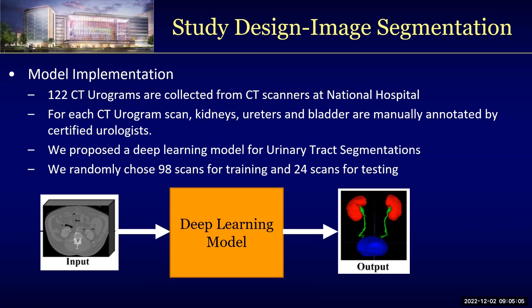We propose a deep learning model for urinary tract segmentation. As shown in the image, the deep learning model takes CT scan input and outputs urinary tract segmentations. We have the kidney labeled in red, ureter labeled in green, and the bladder labeled in blue.